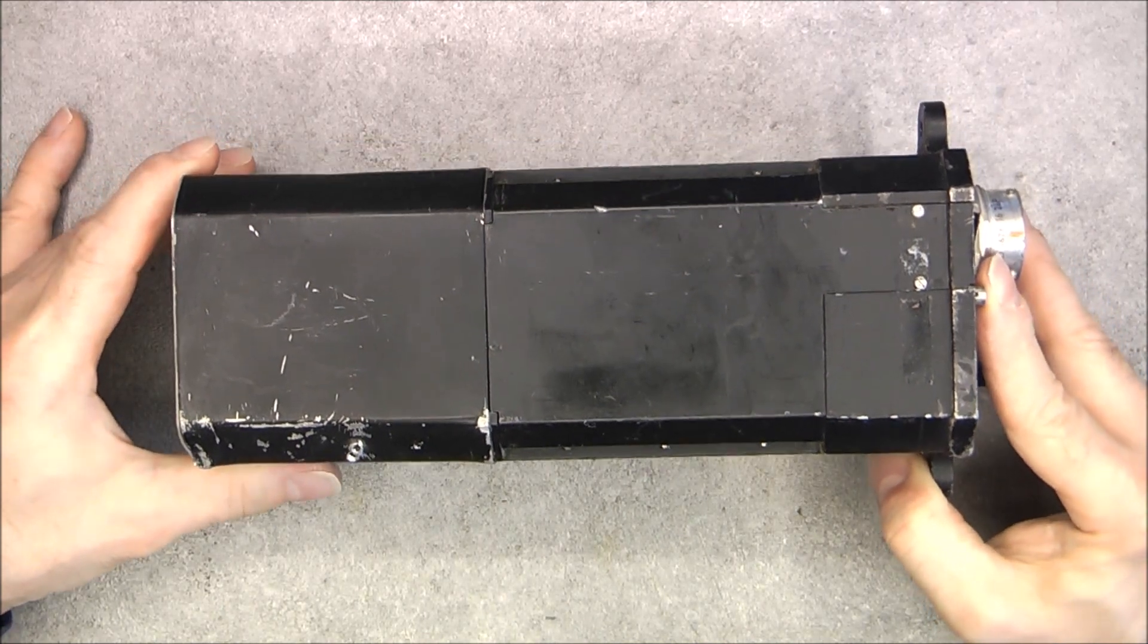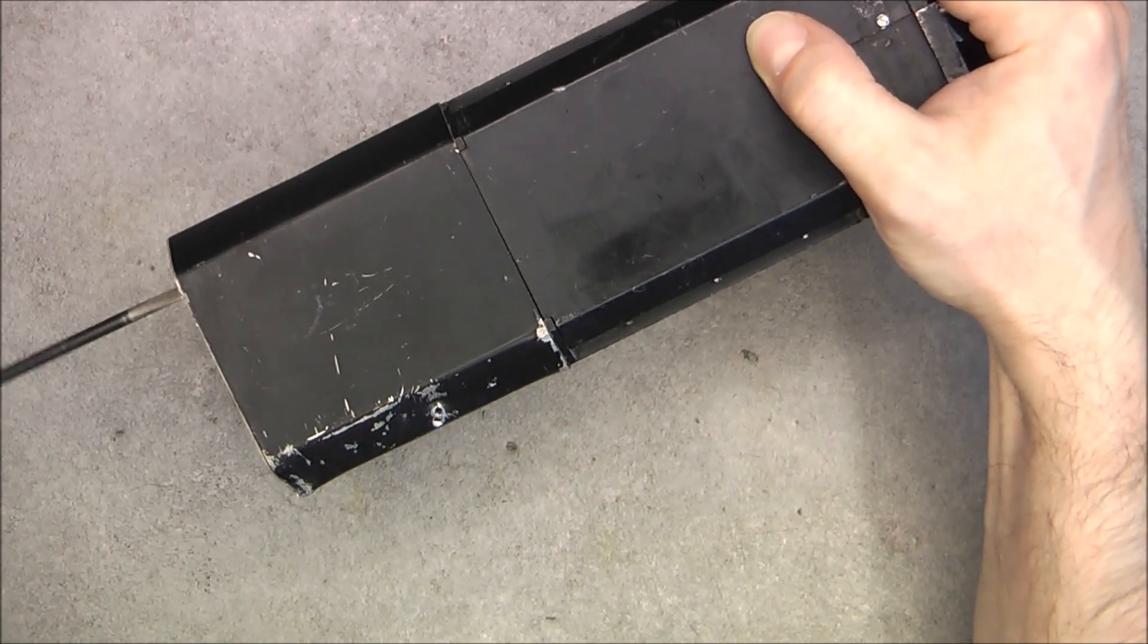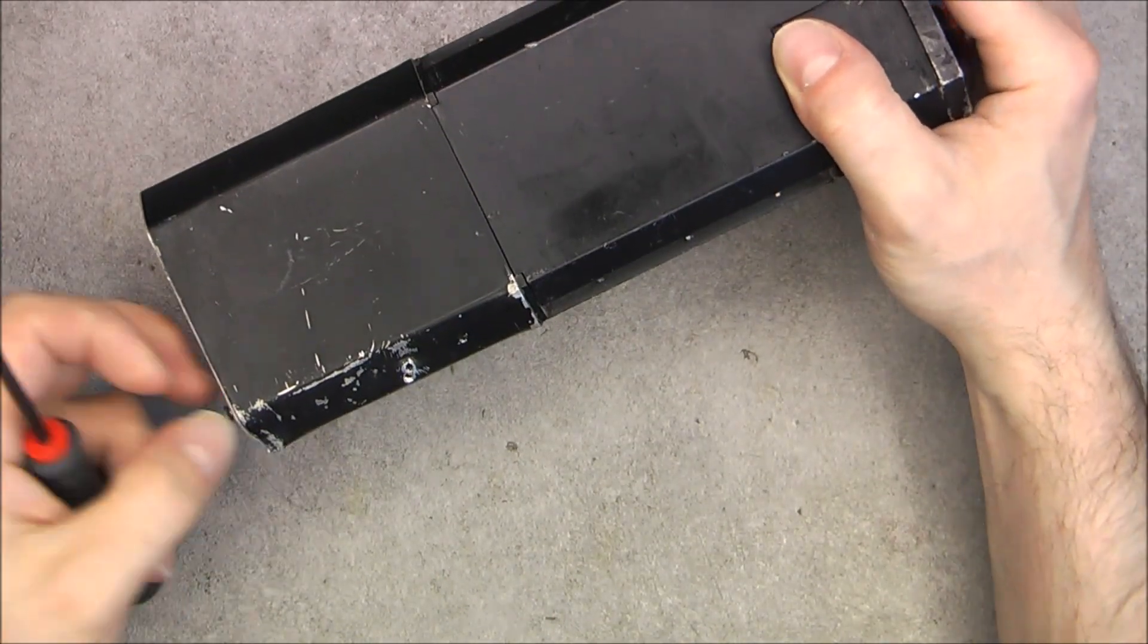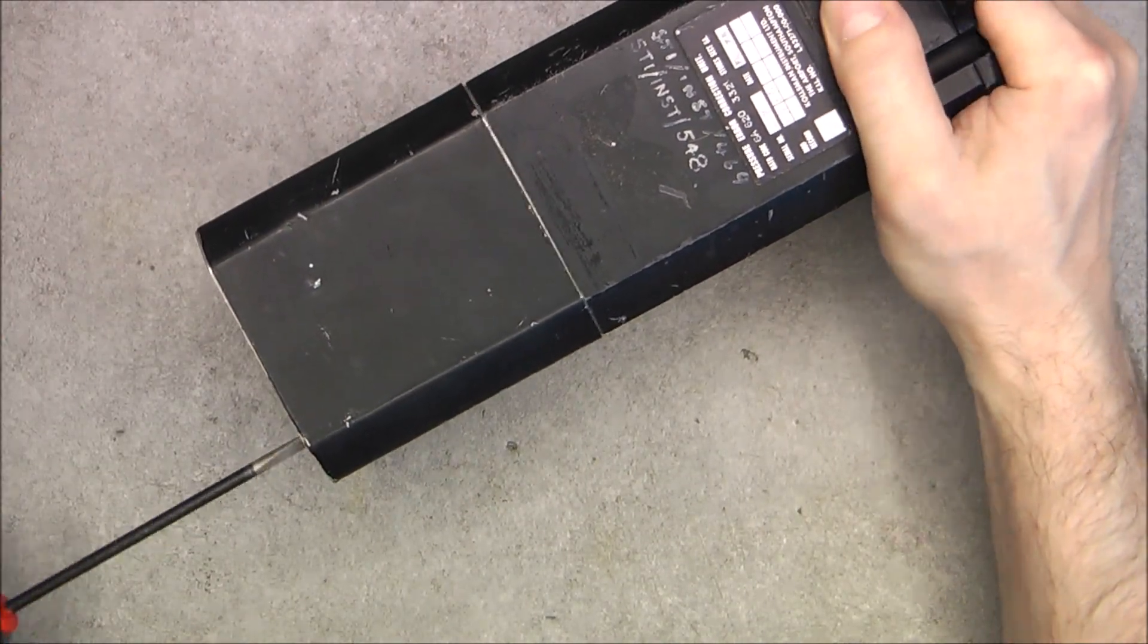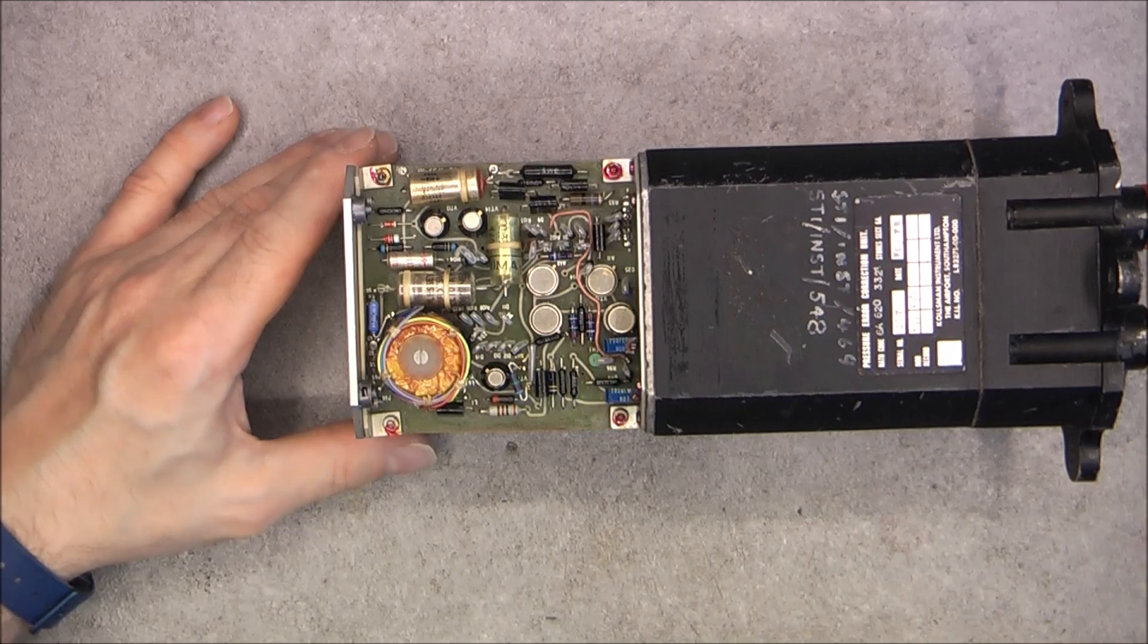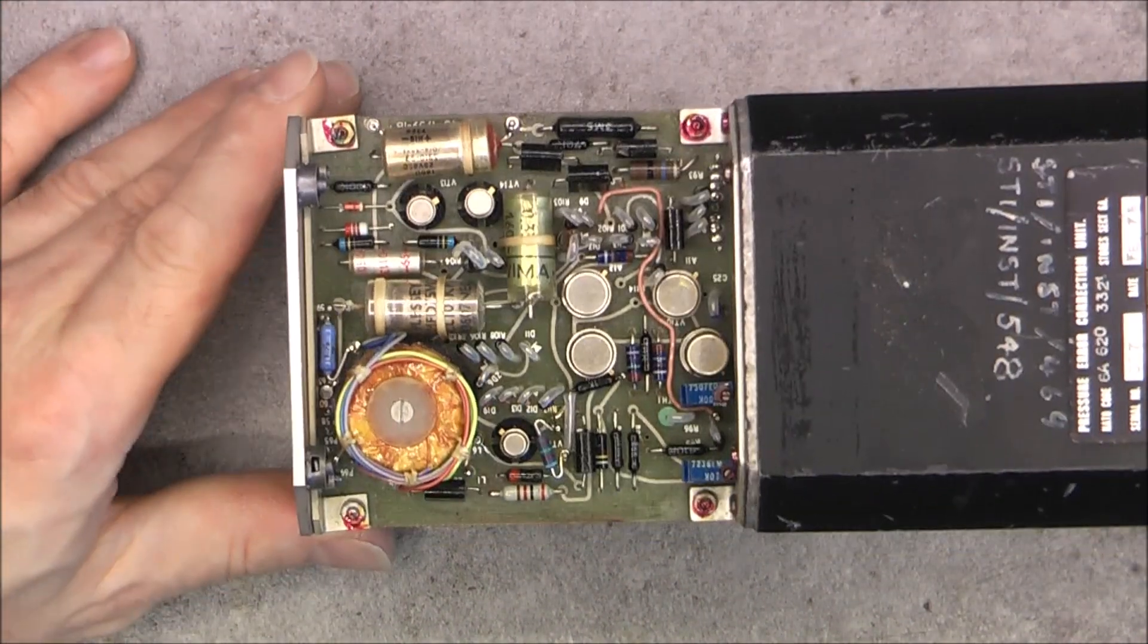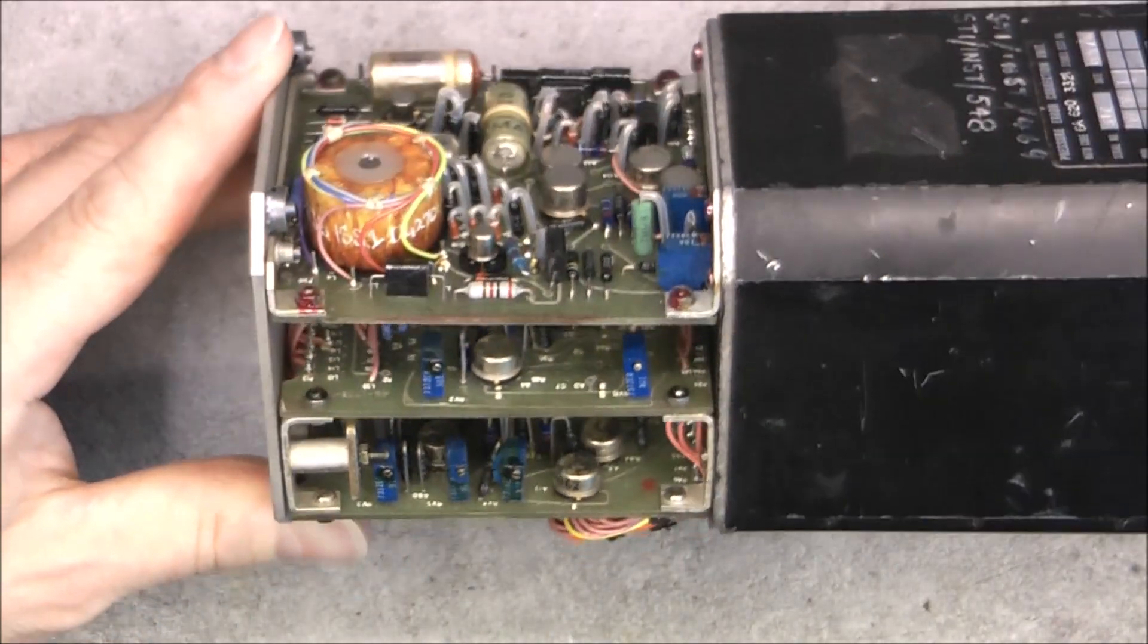So I will undo some screws for you. So first, in this rear compartment, we have electronics and actually more electronics than expected because we have three circuit boards that are stacked all together.